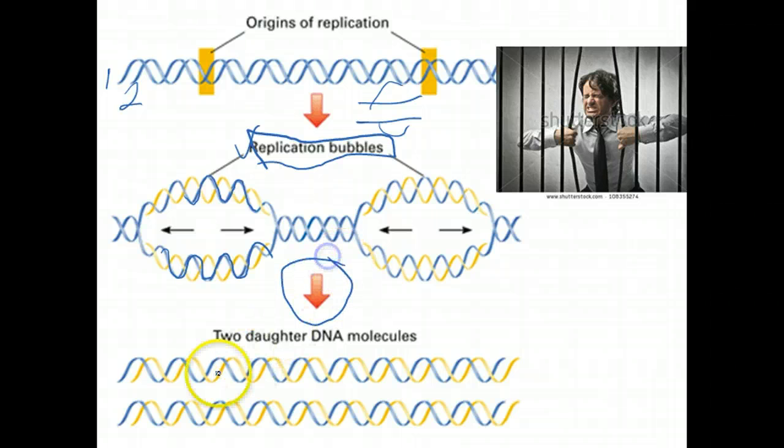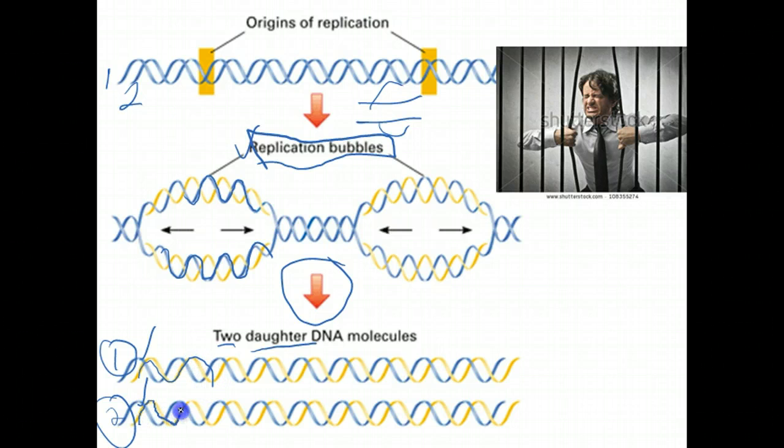In the end, once this is complete, you're going to have two new daughter strands, two new daughter molecules of DNA, so you're going to have this daughter molecule here, this daughter molecule here. Remember, the original strands were these two blue ones, and essentially we've made two new complementary strands, shown here in yellow, to make two whole DNA molecules. So that's the logistics of that.